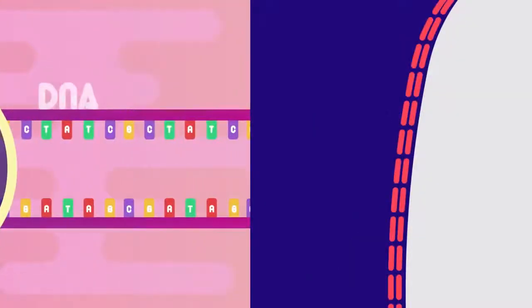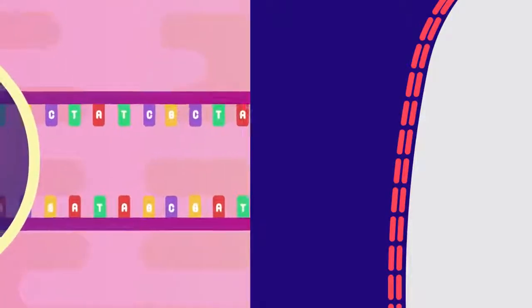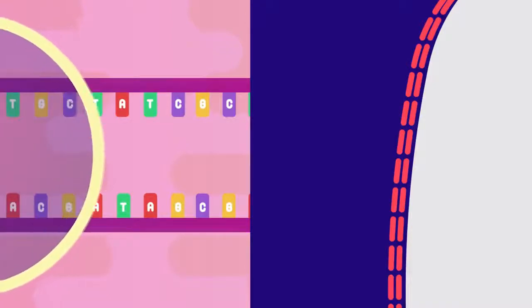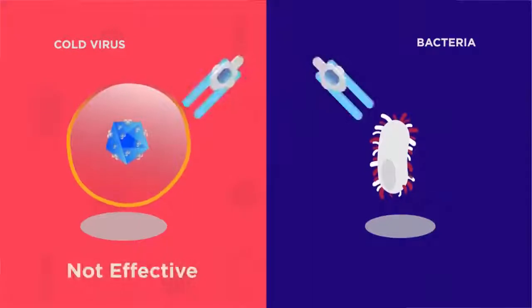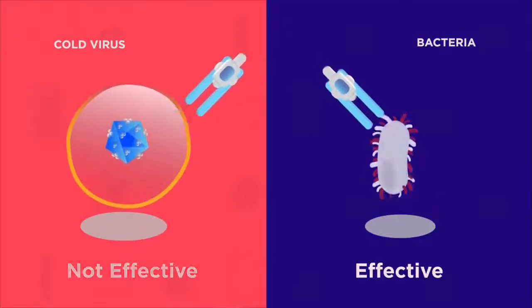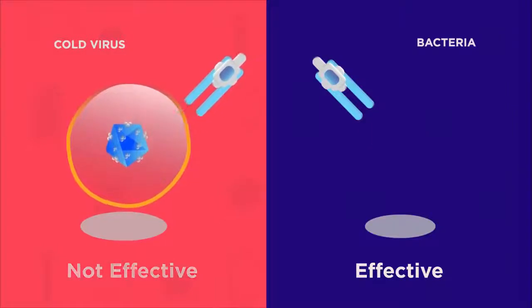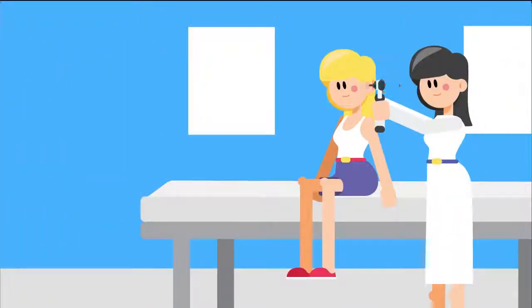Antibiotics do this by inhibiting certain metabolic or chemical processes which occur inside the bacteria. For example, they can stop protein synthesis, DNA replication, or break down their cell wall. This is why they are not useful against viruses. As viruses are not living organisms and so they don't have metabolic processes that the antibiotics can disrupt. This is why it is very important to check whether an infection is caused by a bacterium rather than a virus before attempting to treat it with antibiotics.